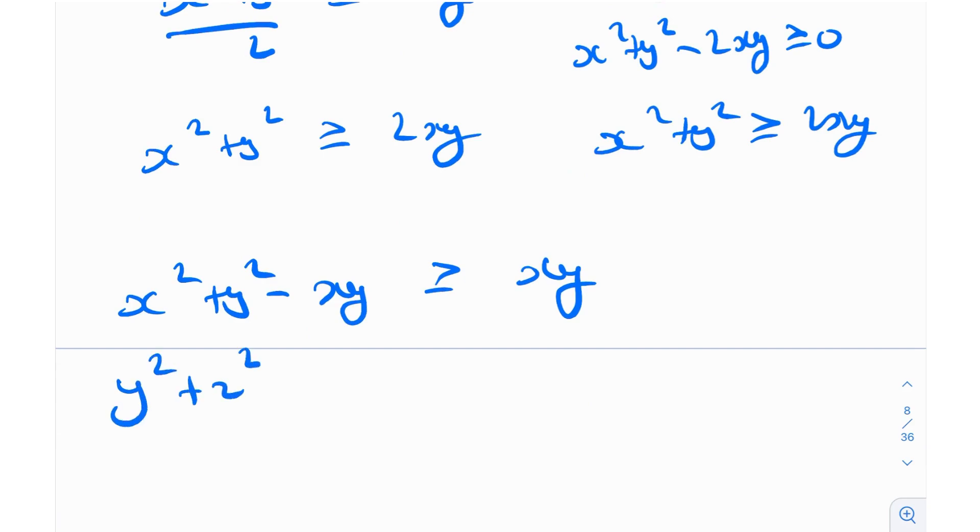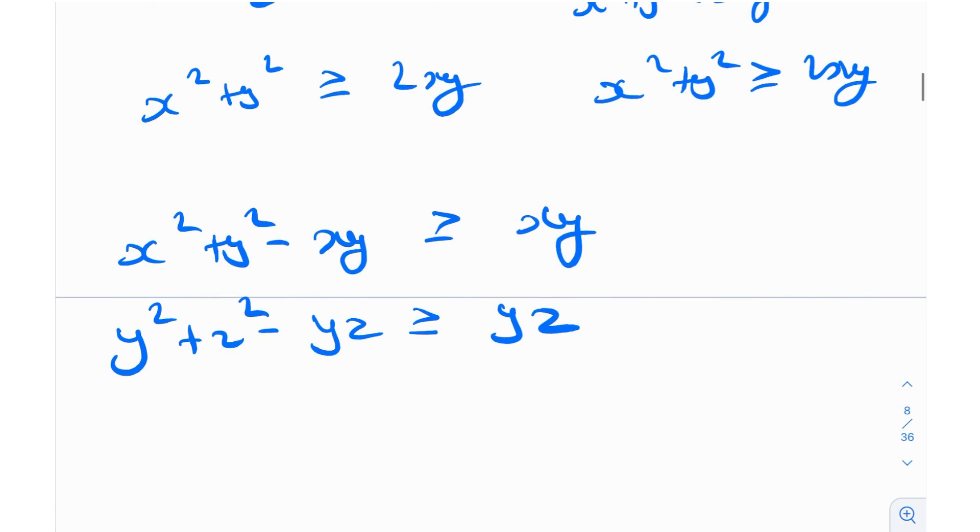Similarly, by symmetry, y squared plus z squared minus yz is greater than or equal to yz. And similarly, z squared plus x squared minus xz is greater than or equal to xz.